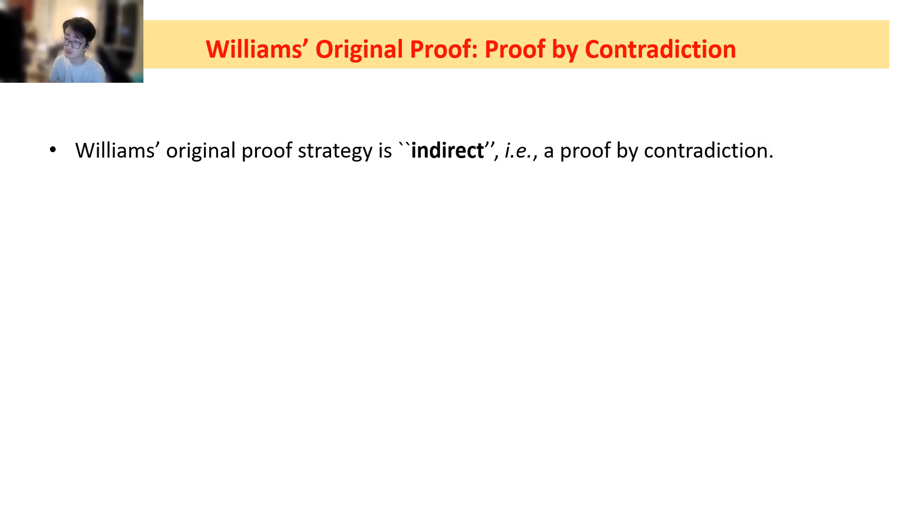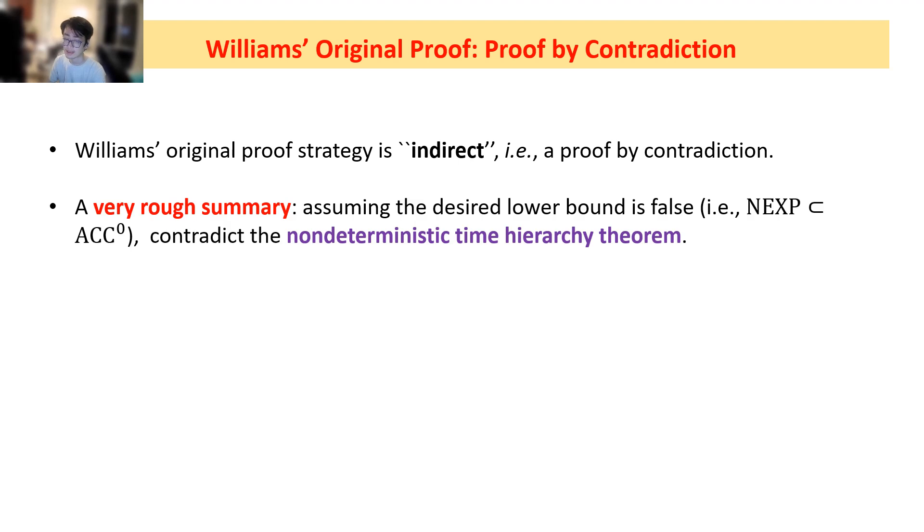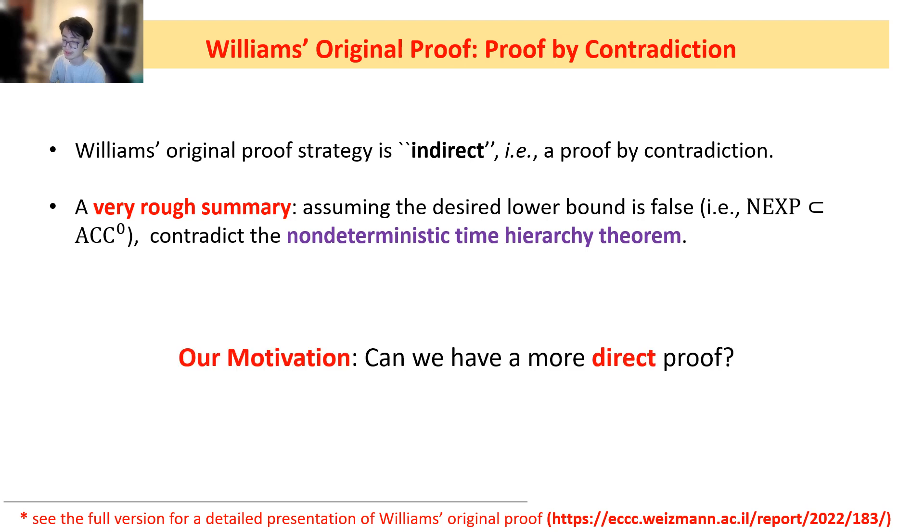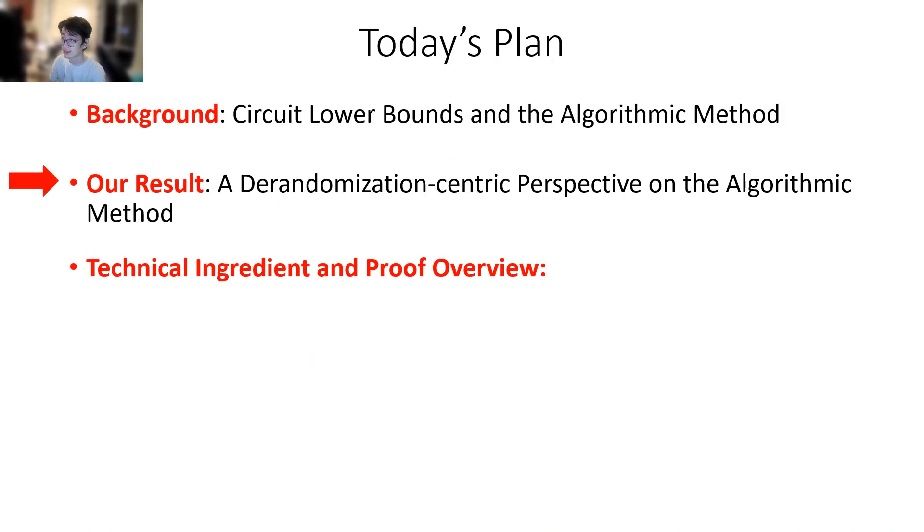Williams's original proof is kind of indirect, in the sense that it's essentially, at its heart, a proof by contradiction. A very rough summary is that you assume the desired lower bound is false. For example, you assume that NEXP is contained in ACC^0, and then you contradict the non-deterministic time hierarchy theorem, meaning that the lower bound must be true. See the full version of this paper for a detailed presentation of Williams's original proof. Our motivation is, can we have a more direct proof? Of course, this question is kind of vague, but intuitively we want to avoid any proof by contradiction. Such a proof might be easier to understand.